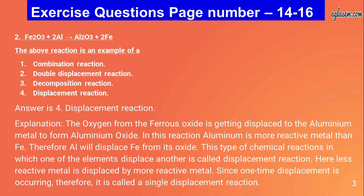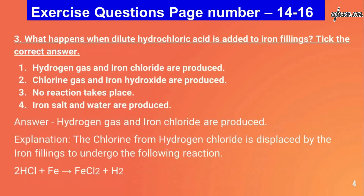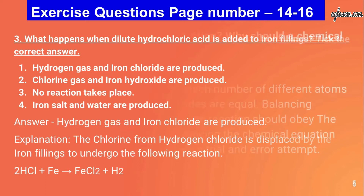Question number three: what happens when dilute hydrochloric acid is added to iron filings? The answer is: hydrogen gas and iron chloride are produced. The chlorine from hydrogen chloride is displaced by iron filings in the reaction: 2HCl + Fe → FeCl₂ + H₂.